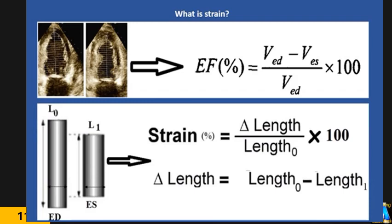As you remember, the concept of ejection fraction and strain are the same, but the technique is different. In ejection fraction, we calculate the percentage of volume change during cardiac activity: end-diastolic minus end-systolic, divided by end-diastolic, multiplied by 100. This gives us ejection fraction — a percentage of how much the volume of the left ventricle changes with contraction.